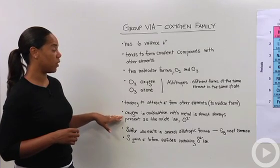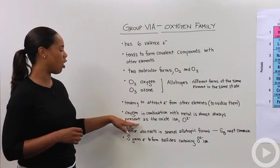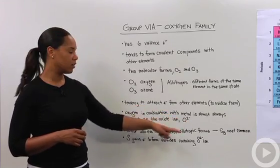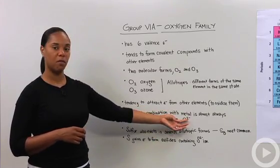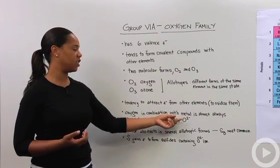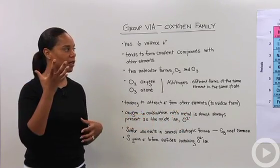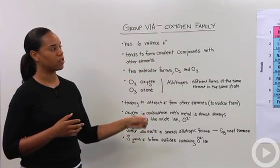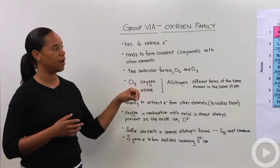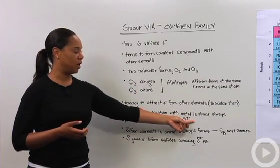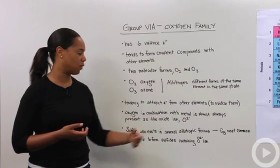So oxygen in combination with metal is almost always present as the oxide ion or O2 minus. So this is to say that the oxidation number or oxidation state of oxygen usually in combination with the metal is O2 minus. If you think about it, that makes sense because you know that the metals, more or less groups 1A and 2A, like to form positively charged ions, so they would like to be countered by this 2 minus from oxygen.